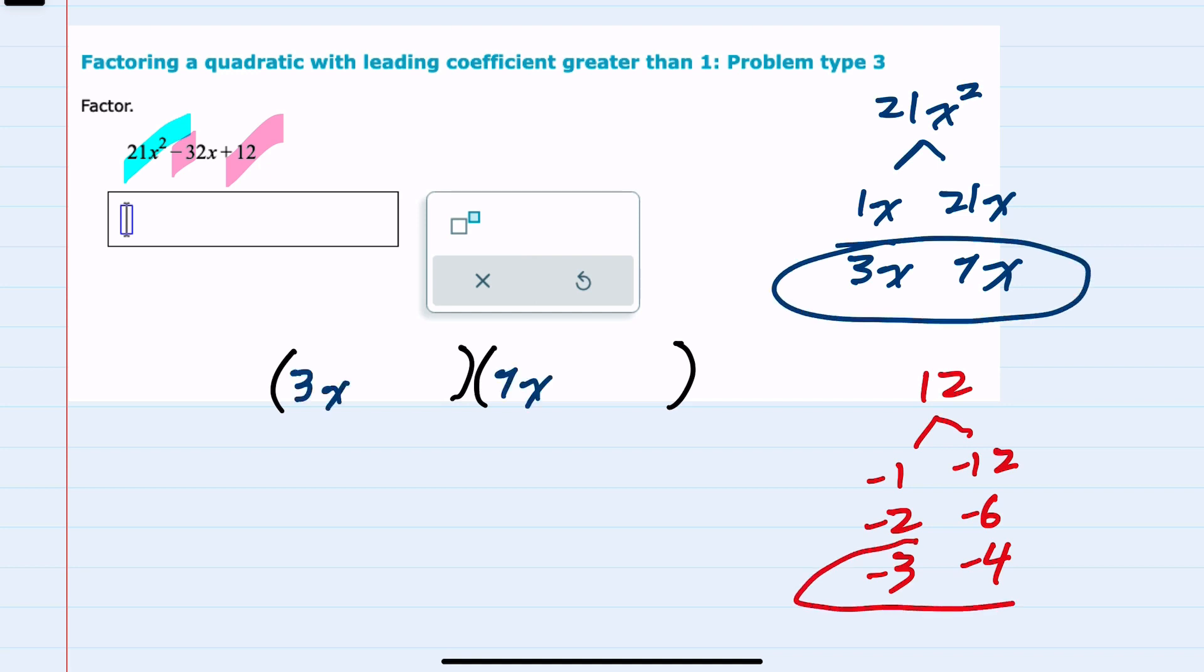I'll start by trying the negative 3 and the negative 4. When I plug those in as negative 3 and negative 4, the way I can check is to see if that gives me the negative 32x. Whenever I multiply the inside I get a negative 21x, and when I multiply the outside I get a negative 12x. Those combine to be a negative 33x, but not a negative 32. That combination does not work.